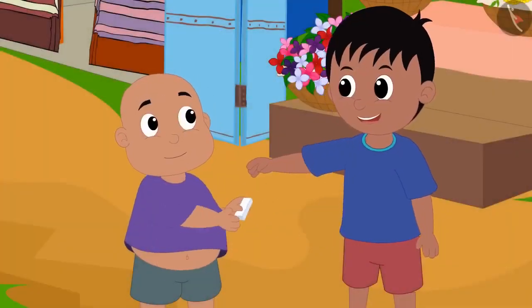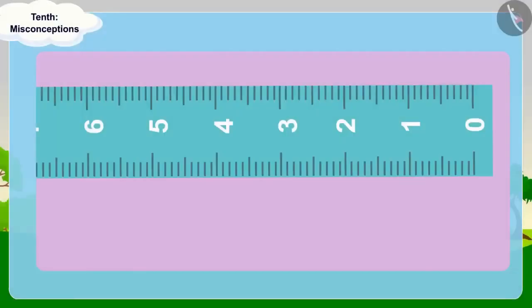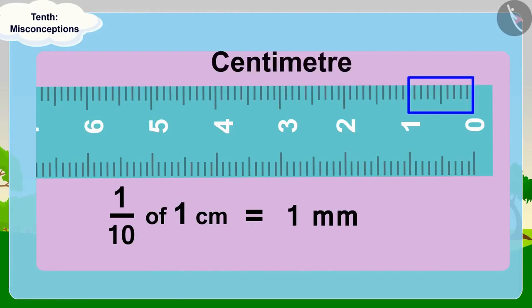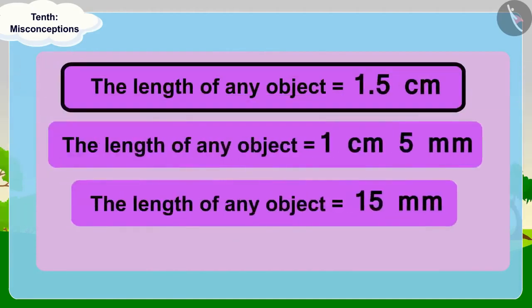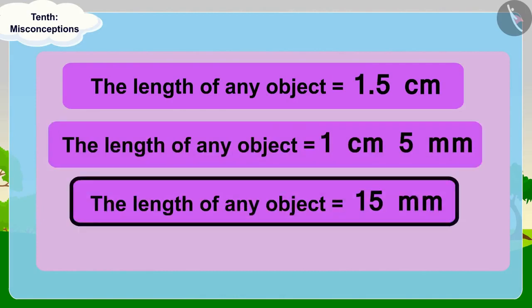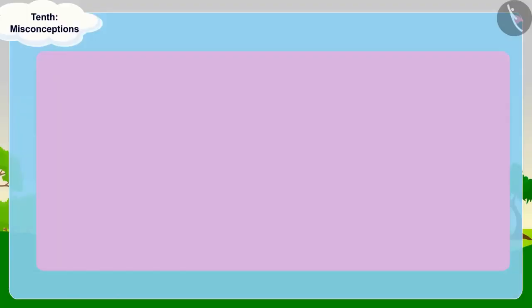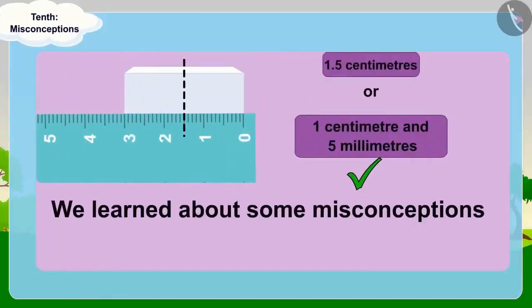Raju and Babalu split the eraser in half. Children, because a millimeter is 1 tenth of a centimeter, we can write the length of any object in these three ways and they are exactly the same. In this video, we learned about some misconceptions related to tenths.